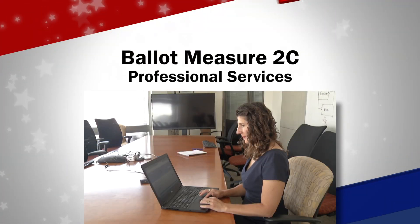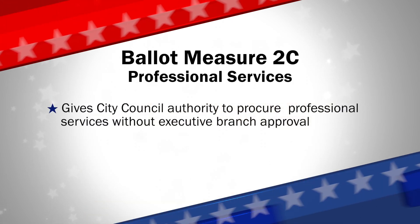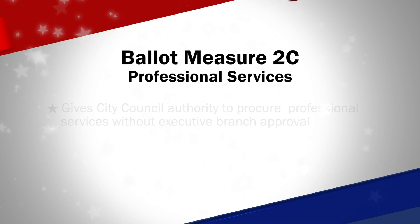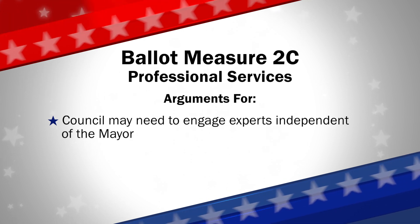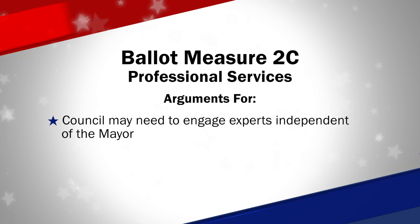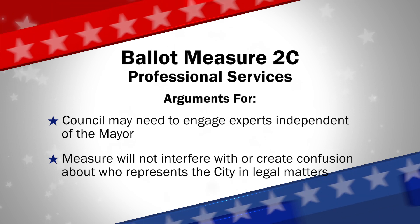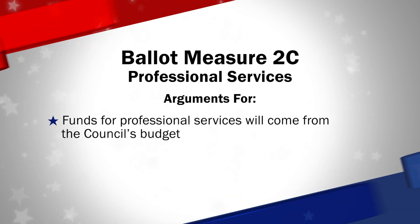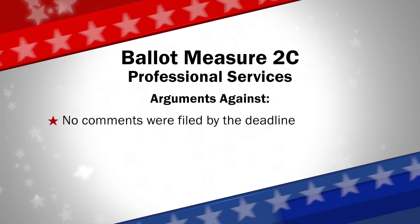Ballot measure 2C amends the charter to give city council the authority to procure professional services without executive branch approval. Those in favor of 2C say that to fulfill its charter responsibilities, the council may need to engage experts independent of the mayor. This measure will not interfere with or create confusion about who represents the city in legal matters. Funds for professional services will come from the council's budget. There were no comments against the measure filed by the deadline.